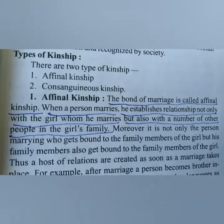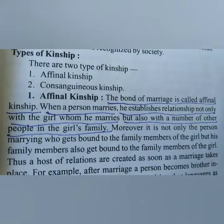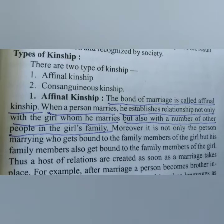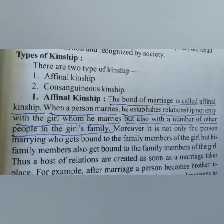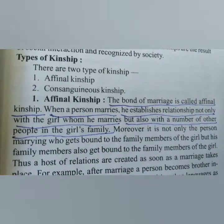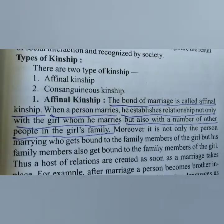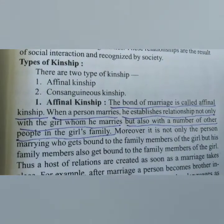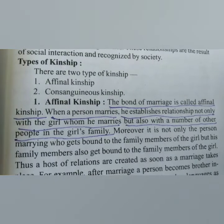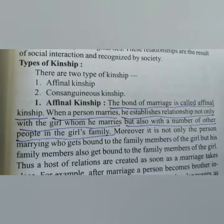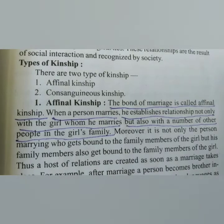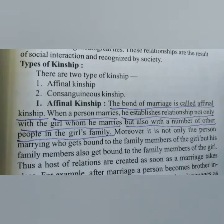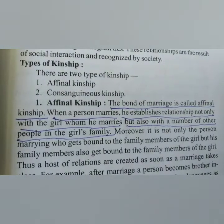When a person marries, he has a relationship not only with the girl whom he marries, but also with a number of other people in the girl's family. This is a primary kinship — like husband and wife, son and father, daughter and mother. This type of relationship is called affinal kinship.